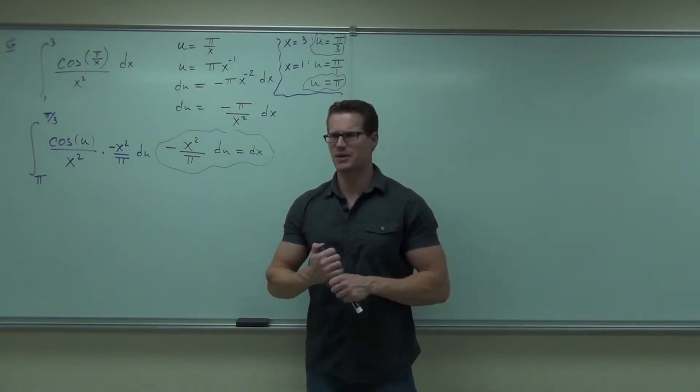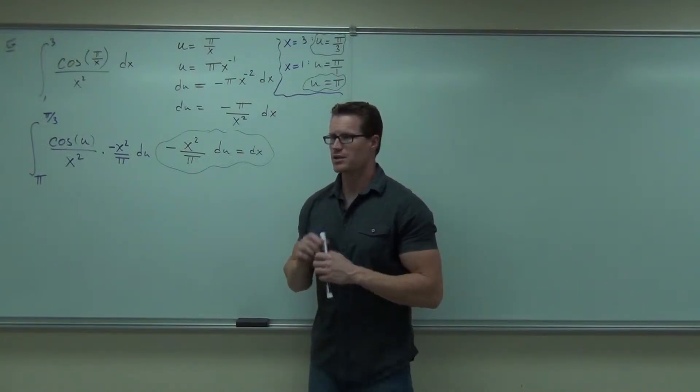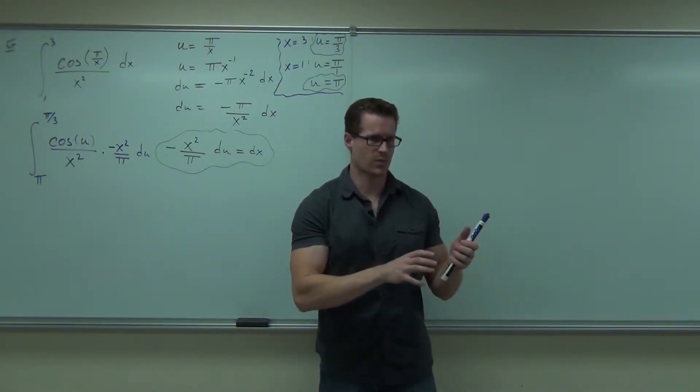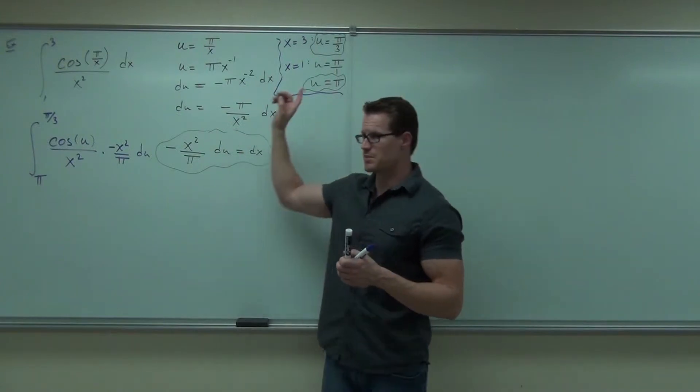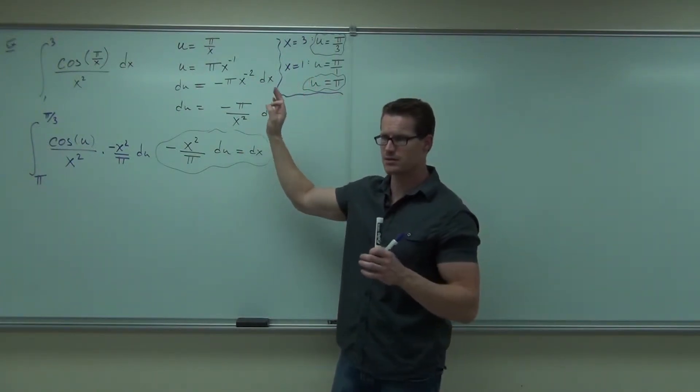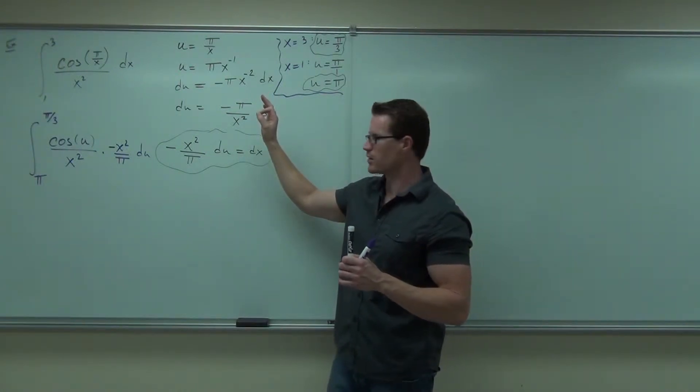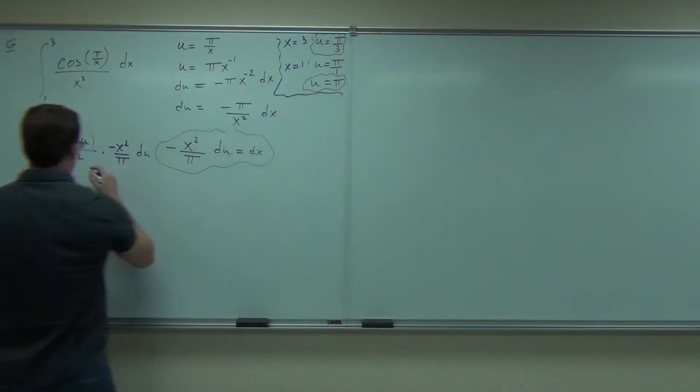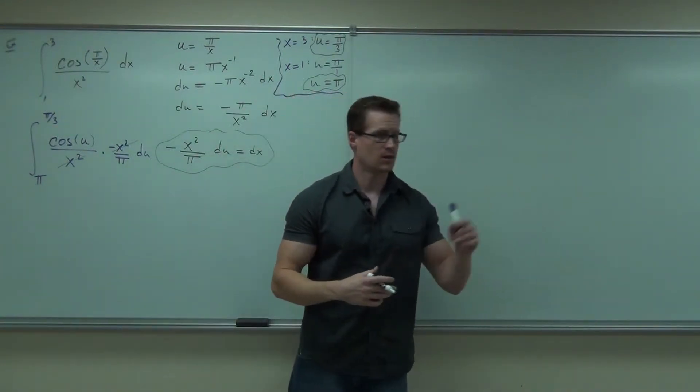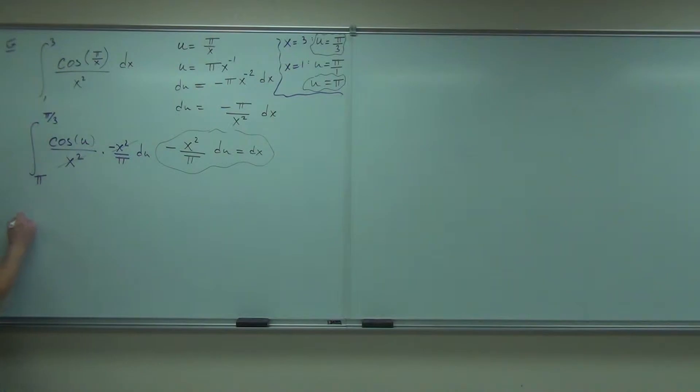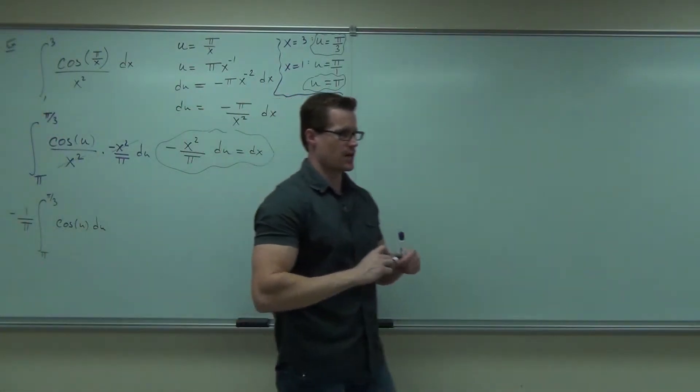Now some interesting things are going to happen. Some things are going to cross out. Some signs are going to be pulled out. Some constants are going to be pulled out. Tell me one thing that happens. x² is canceled. Cross out your x². That's great.